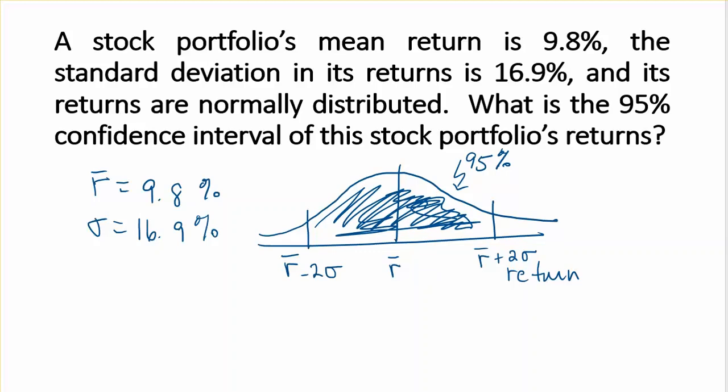Let's find the confidence interval. The lower bound here would be 9.8% minus 2 times 16.9%, which equals negative 24%.